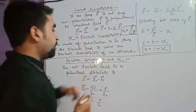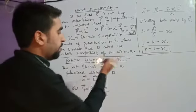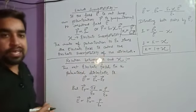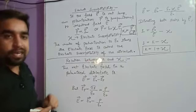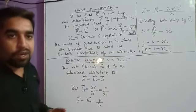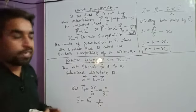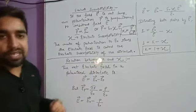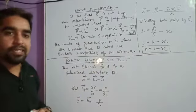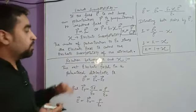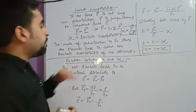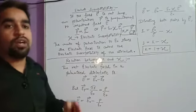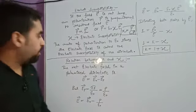Now there is a very important relation between K and χ. K is the dielectric constant or relative permittivity, which we have studied, and χ is the electric susceptibility we just covered. There is a relation between these two, which is often asked in board exams, so you have to go through it carefully.